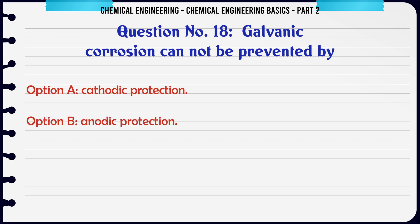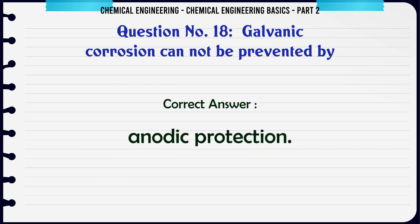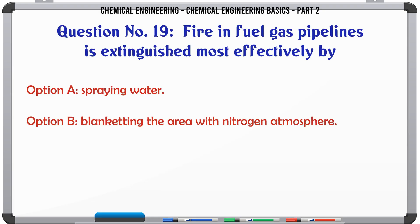Galvanic corrosion cannot be prevented by: a) cathodic protection, b) anodic protection, c) usage of largest possible anodic area, d) any one of these. The correct answer is: anodic protection.